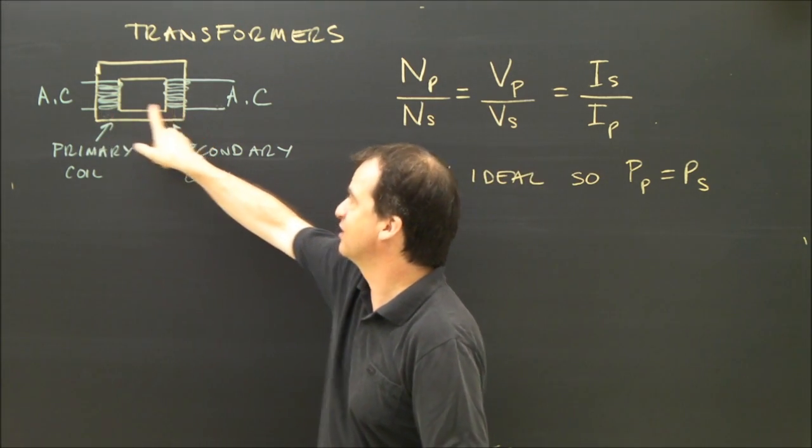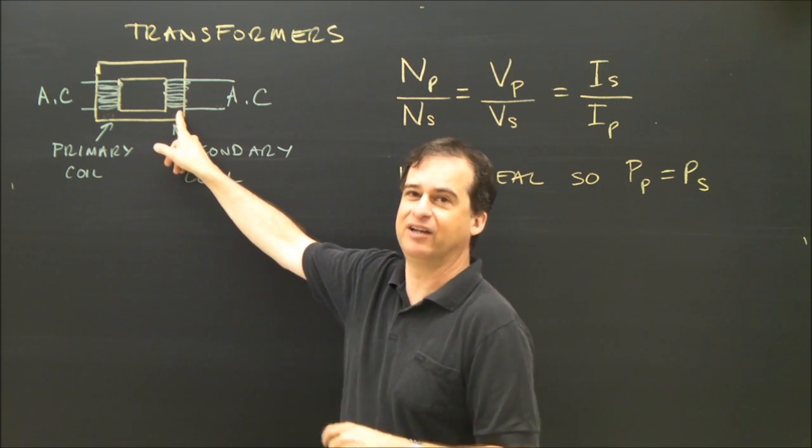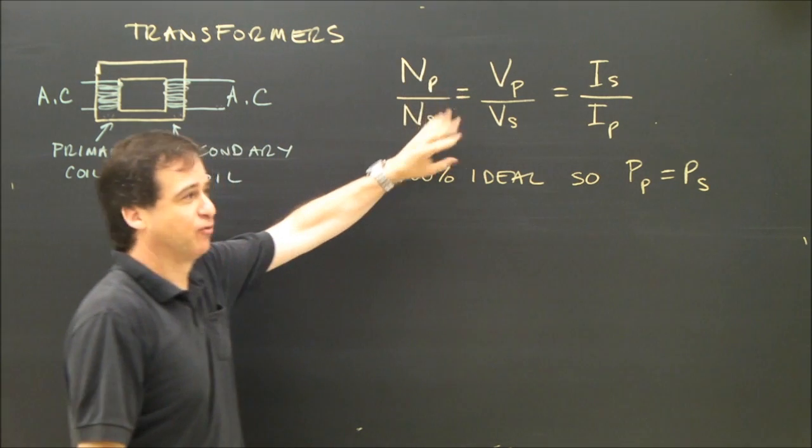If I double the coils on this side to this side, the voltage will double, but the current will be cut in half.